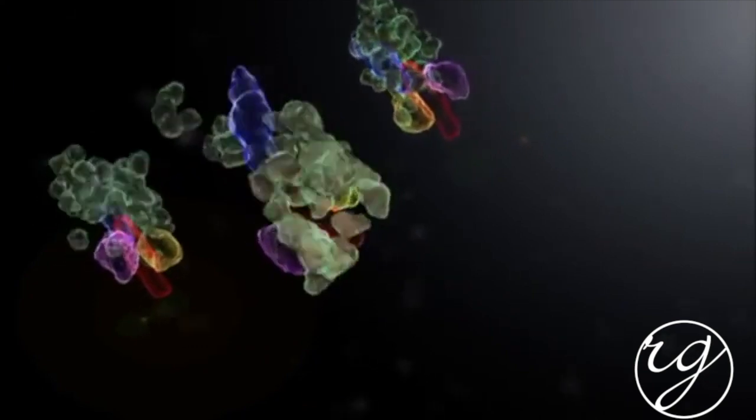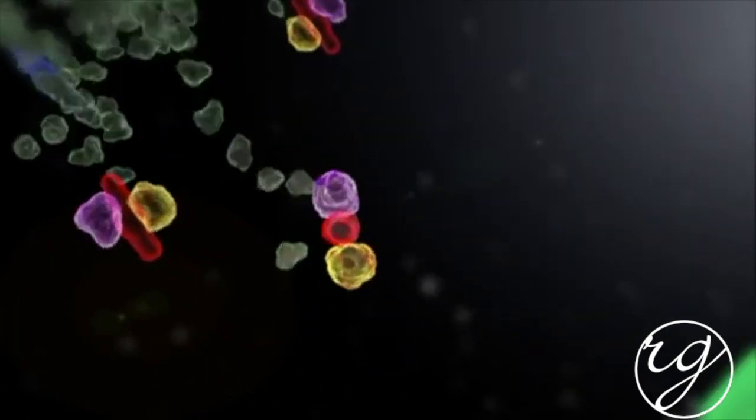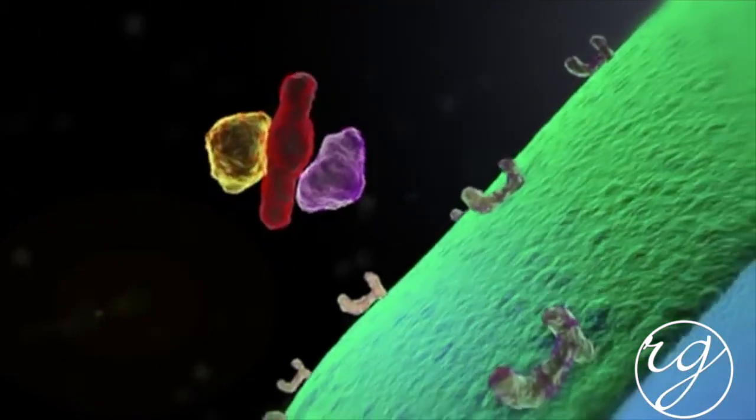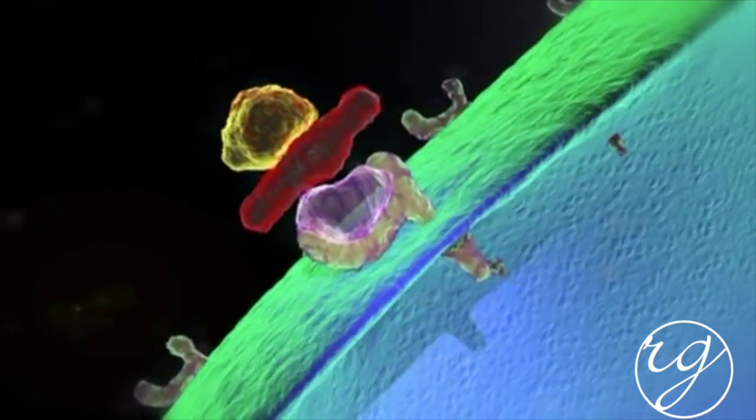The Botox core molecule dissociates from the accessory proteins and targets the nerve endings. The binding domain of the Botox core molecule is the C-terminal portion of the heavy chain with an acceptor on the nerve.